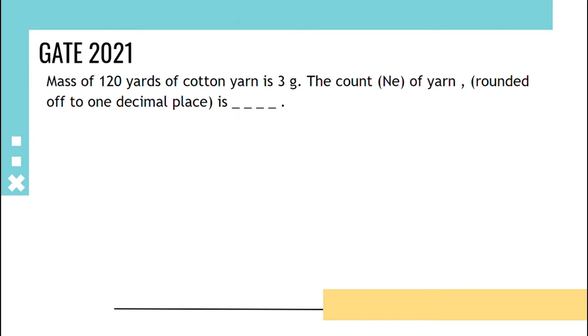We know that one yard equals 0.914 meters. Given that 120 yards, so that length will be 120 into 0.914 meters, that is 109.68 meters.